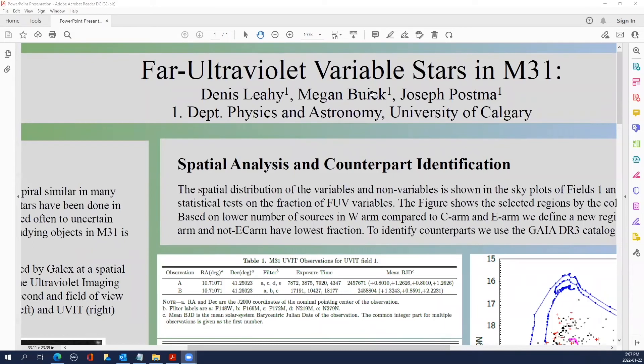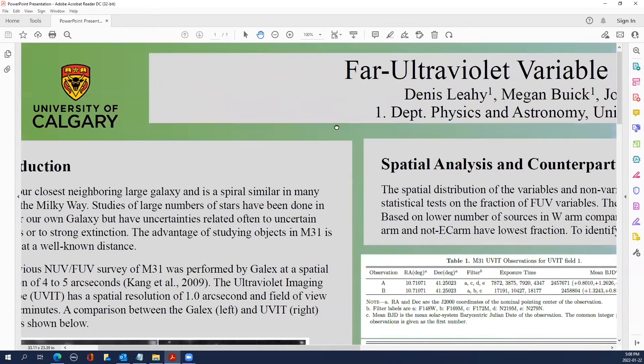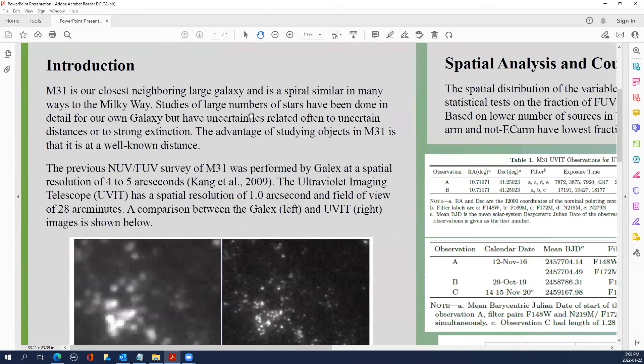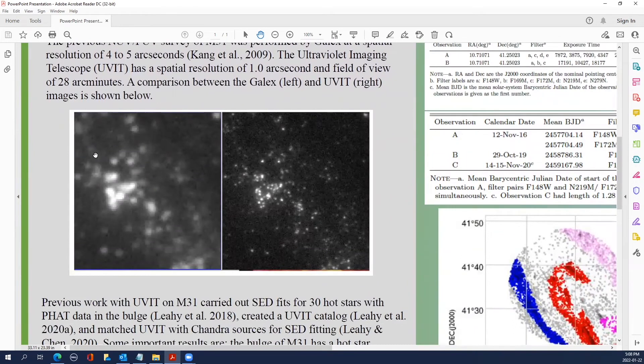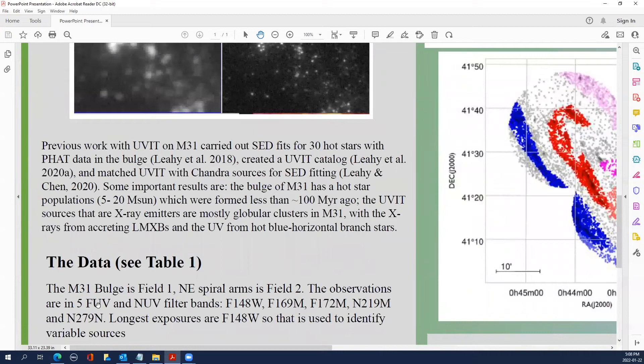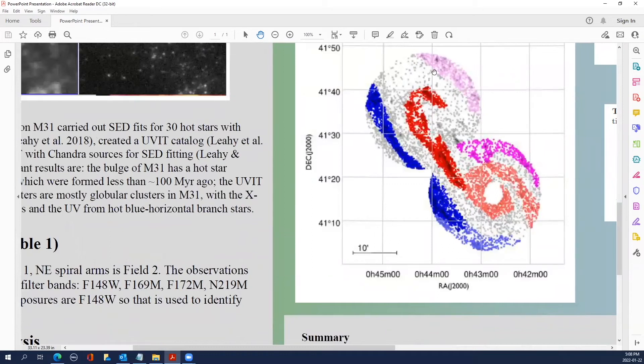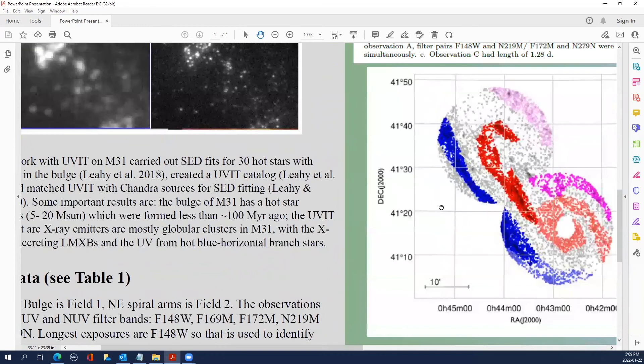Hello, my name is Dennis Leahy. My poster is on far ultraviolet variable stars in M31, work done at the University of Calgary. This is based on observations with the AstroSat satellite. To illustrate the data here, I've shown the GALEX image of a small region and one of our exposures with UVIT, showing that we could resolve many of the stars in M31. The observations were done in five far ultraviolet and near ultraviolet filters, bulge field and the field northeast of the bulge.